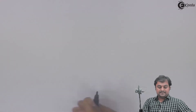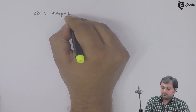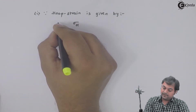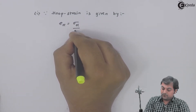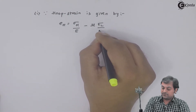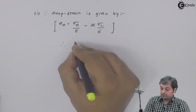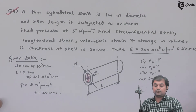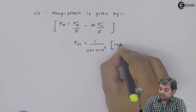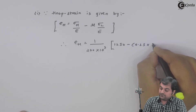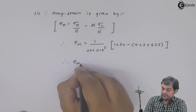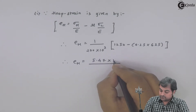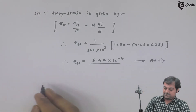Since hoop strain eH = σH / E − μ × σL / E, therefore hoop strain = (1/E) × (σH − μ × σL) = (1 / 200×10³) × (1250 − 0.25 × 625). Calculating this gives hoop strain as 5.47×10⁻⁴. Since it is strain, it has no unit. That is the first answer.